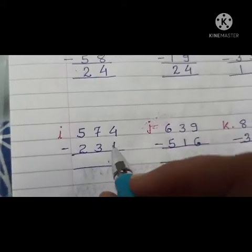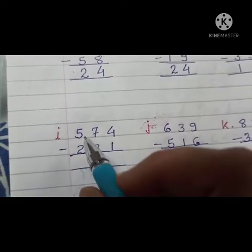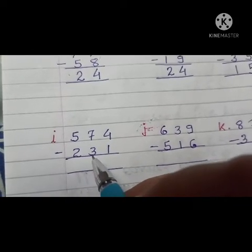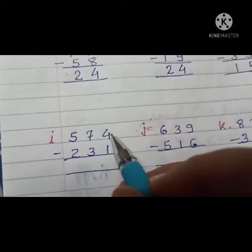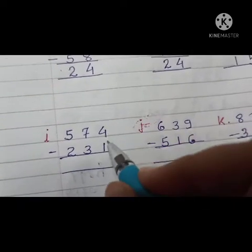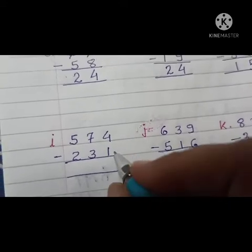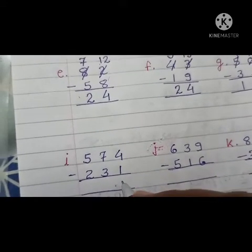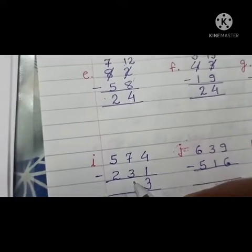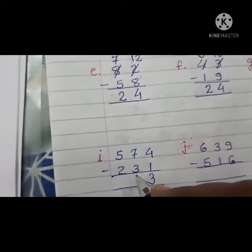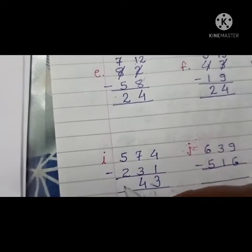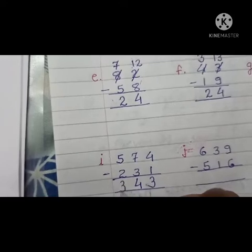Next I: 3-digit numbers. 574 minus 231. Subtract ones first, without borrowing. 4 minus 1 equals 3. Then tens: 7 minus 3 equals 4. Then hundreds: 5 minus 2 equals 3.